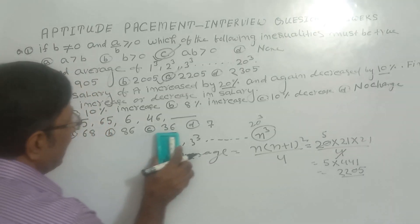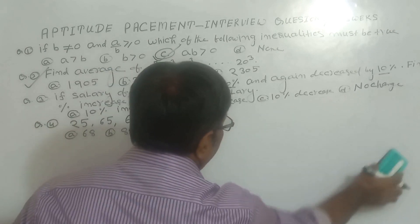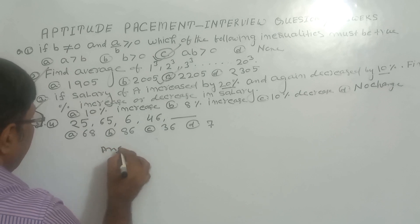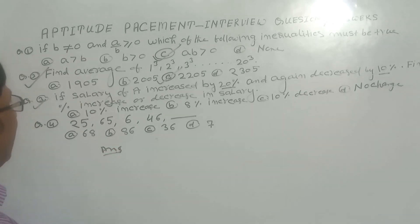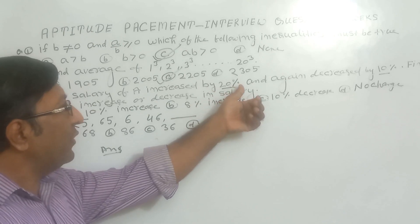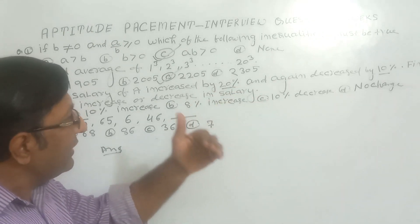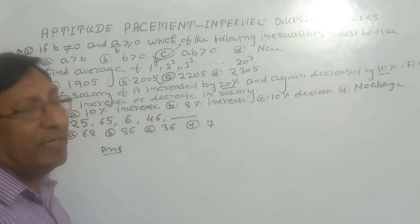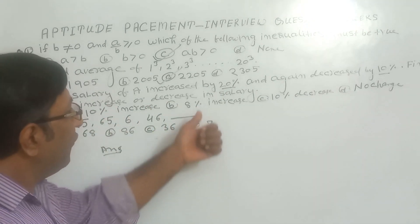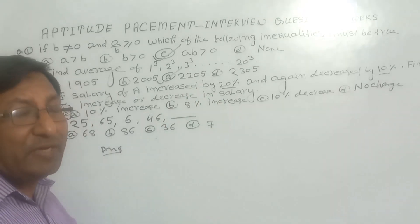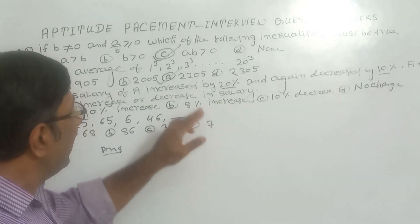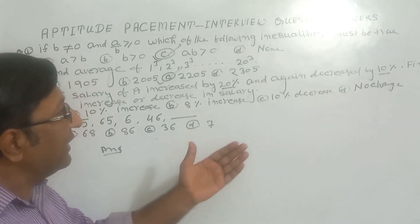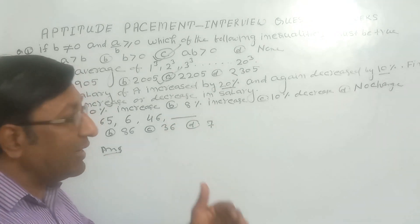Let us see the third question. This question is: if salary of A increases by 20% and again decreases by 10%, then find the percentage increase or decrease in the salary. For solving this type of question, we have a simple technique. Increase percentage means 100 plus given percentage, and decrease means 100 minus given percentage.